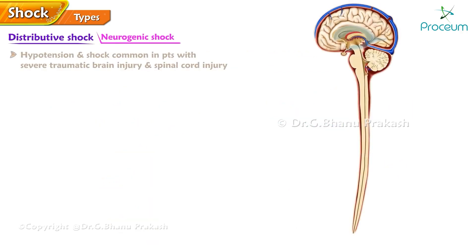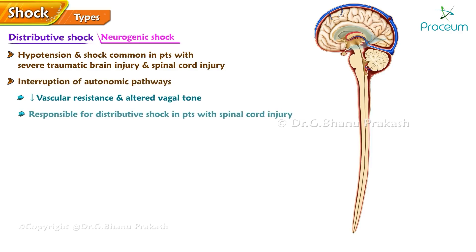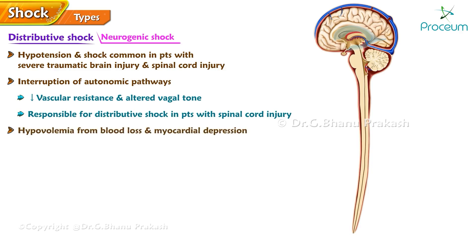Hypotension and, in some cases, overt shock are common in patients with severe traumatic brain injury and spinal cord injury. Interruption of autonomic pathways causing decreased vascular resistance and altered vagal tone is thought to be responsible for distributive shock in patients with spinal cord injury. However, hypovolemia from blood loss and myocardial depression may also contribute to shock in this population.